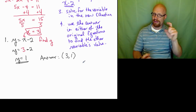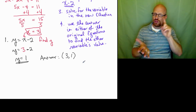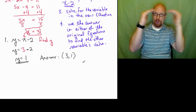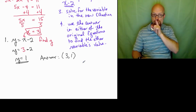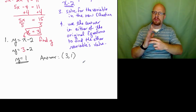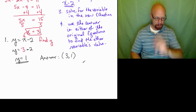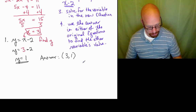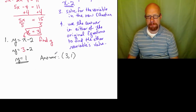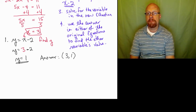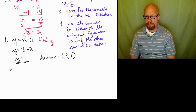Now this answer for our x and y pair — 3 comma 1 — is an answer we think is correct. We need to check the answer. If we substitute it into both equations and both equations become true, then our answer checks out. I'll do that right now.